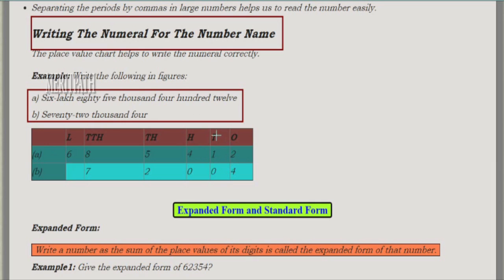For six lakhs eighty-five thousand four hundred and twelve: 2 is in ones place, 1 is in tens place, 4 is in hundreds place, 5 is in thousands place, 8 is in ten thousands place, and 6 is in lakhs place. For seventy-two thousand and four: 4 is in ones place, 0 is in tens place, 0 is in hundreds place, 2 is in thousands place, and 7 is in ten thousands place.